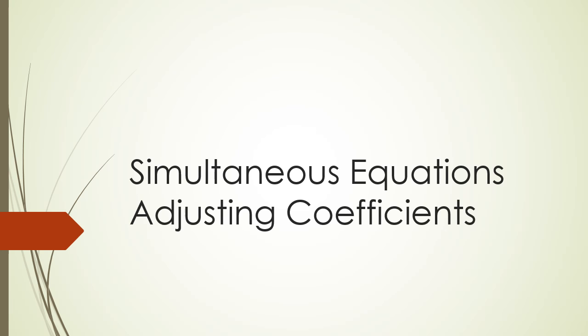Hey guys, in this session we're going to be looking at solving simultaneous equations while adjusting the coefficients. So to get started, here's the question that we're looking at. Find x and y, where 4x plus 3y equals 18, and 2x minus 5y equals negative 4.